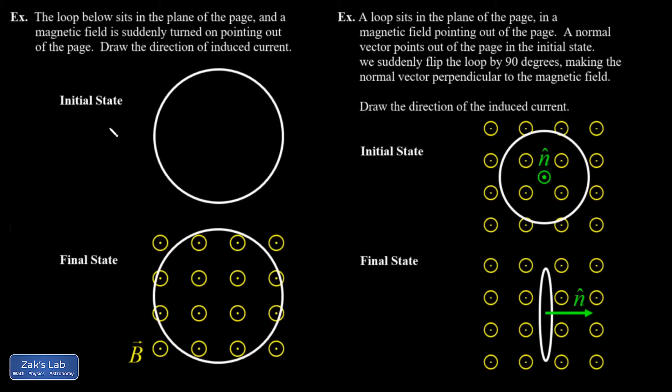Let's wrap things up with a couple qualitative examples. In the first example, I have a loop sitting in the plane of the page and a magnetic field is suddenly turned on pointing out of the page. I'm asked to draw the direction of the induced current here.